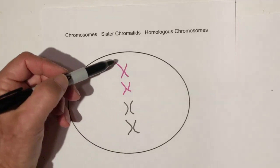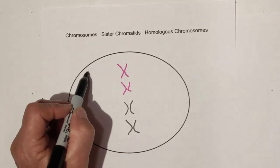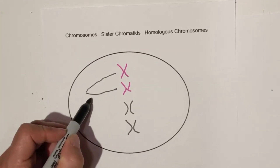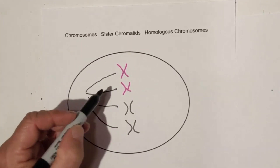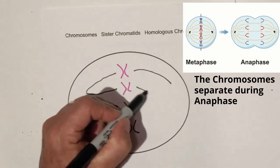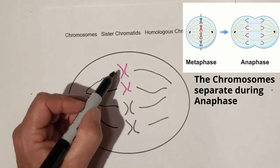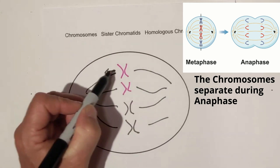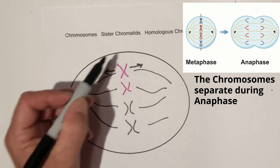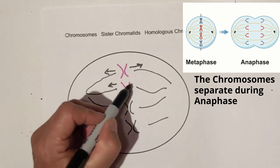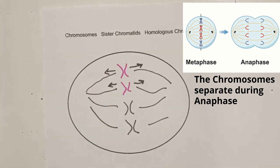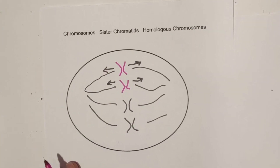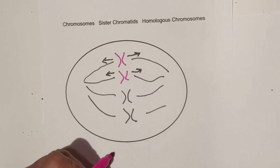Now let's move on to what happens during metaphase. The chromosomes line up in the middle and attach to a spindle fiber. The spindle fiber moves out and the chromosomes begin to separate — this one moving in one direction and this one beginning to move in the other direction.